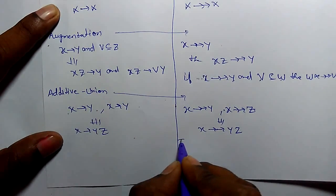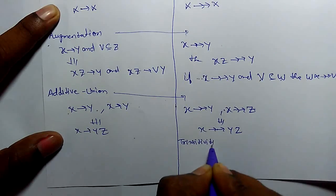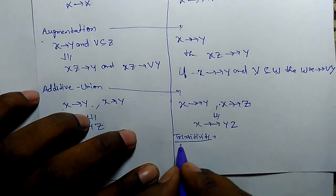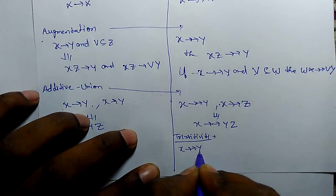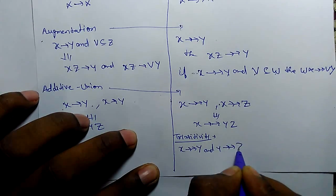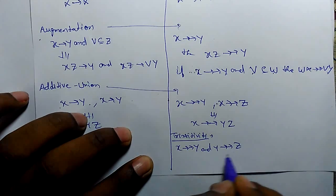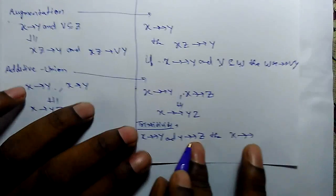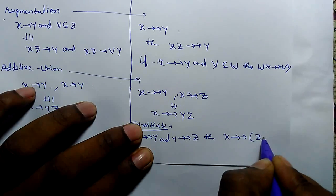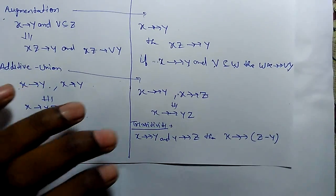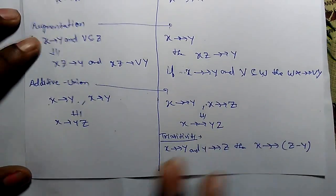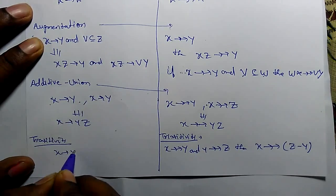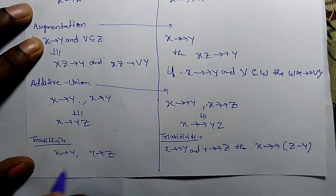The most important rule is transitivity. In multivalue dependency, if X multivalue determines Y and Y multivalue determines Z, then X multivalue determines Z minus Y. This is a little different from functional dependency, where the transitivity rule states that if X determines Y and Y determines Z, then X determines Z.